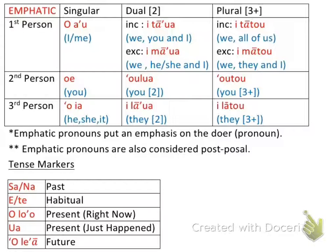The things that you need for this video: the top part of the slide is a table full of the emphatic pronouns. If you don't have those memorized, go back to my last video on emphatic pronouns. And then the bottom part that you need is tense markers. I talked about this in my basic grammar video, and if you don't have those memorized, go back to my basic grammar video and re-watch that.